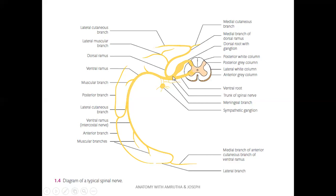The spinal nerve is a mixed nerve with both sensory and motor components. The dorsal root is the sensory component and has a dorsal root ganglion — a collection of cell bodies — over it. Ganglia are collections of cell bodies outside the central nervous system, seen in the peripheral nervous system. There is also a sympathetic ganglion related to the spinal nerve. Dorsal root ganglia contain unipolar sensory nerve cell bodies, whereas sympathetic ganglia contain multipolar neurons.